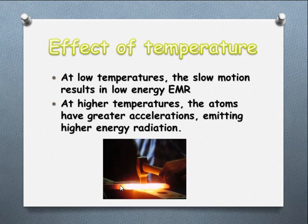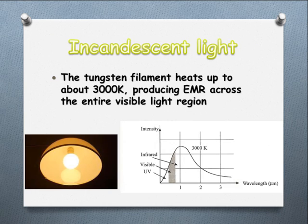So that's where we get this glow, this visible light starting to be given off as it heats up. With an incandescent light bulb, the tungsten filament is probably around the 3000 degree temperature mark and so they're giving off quite a range of EM radiation. The bulk of it is actually in the infrared so it's given off as heat, so it's not super efficient in terms of giving off light, but a large portion is in the visible light region and even some UV radiation is given off.